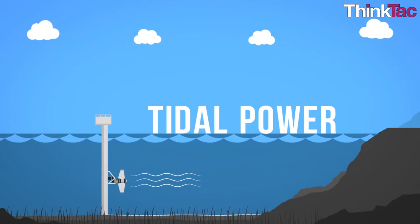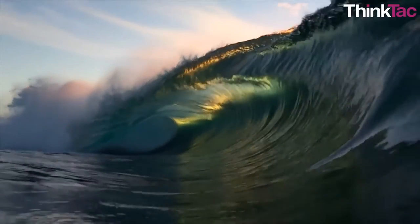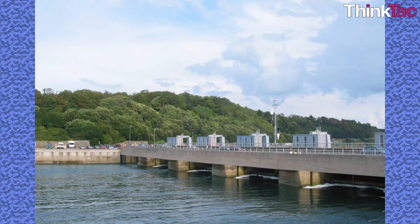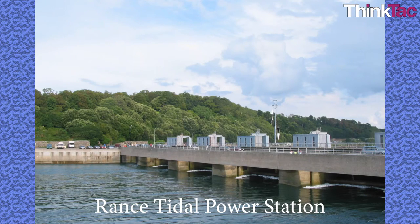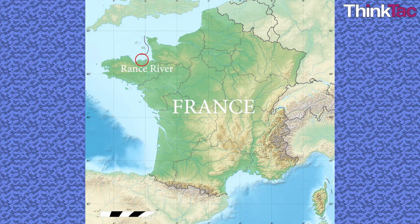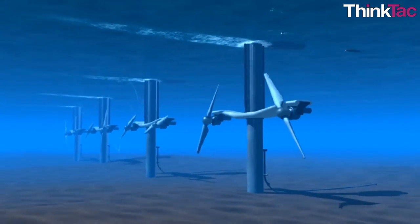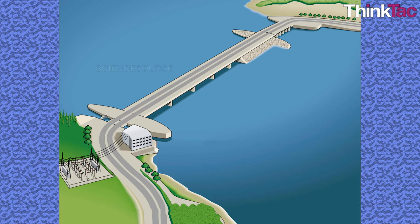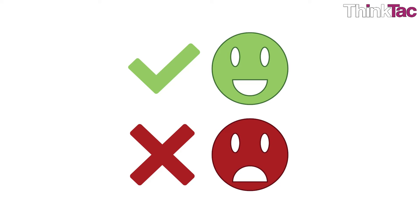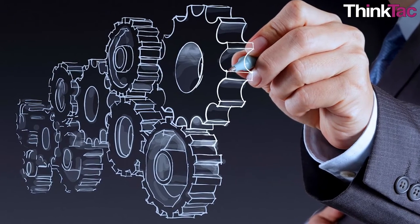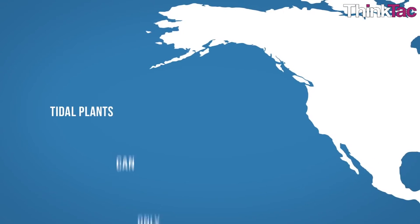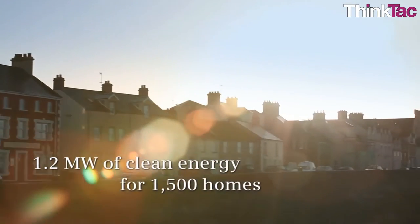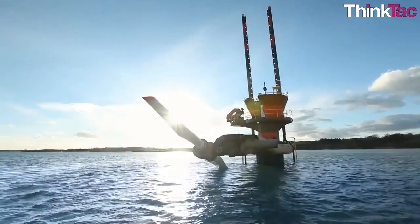Tidal power, or tidal energy, is a form of hydropower that converts the energy of tides into electricity or other forms of useful energy. The first large-scale tidal power generation plant was the Rance Tidal Power Station, which started operation in the estuary of the Rance River in Brittany, France, in 1966. However, because tidal power has suffered from very high initial cost and limited availability of proper sites, it has not become as widely used as one might expect. Recent technological developments have opened up new possibilities and brought down economic and environmental costs to more competitive levels.